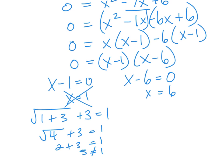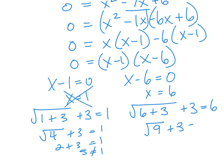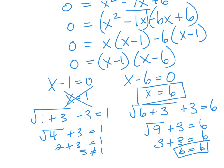Let's check x equals 6: substituting into the original equation gives the square root of 6 plus 3 plus 3 equals 6. That's the square root of 9 plus 3 equals 6, so 3 plus 3 equals 6. This is true, so x equals 6 is the solution to this equation.